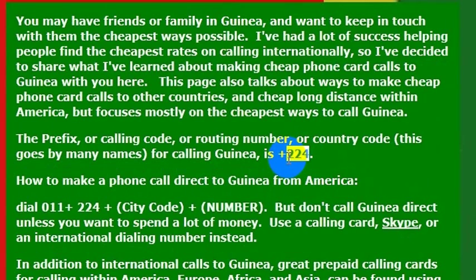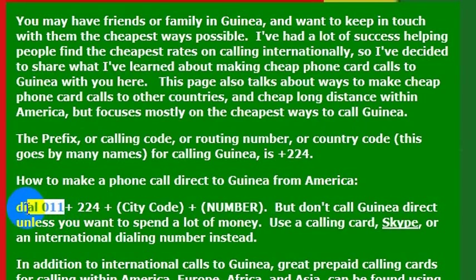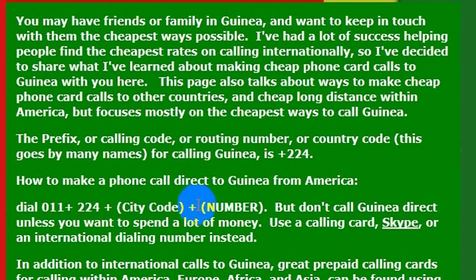To call Guinea from the United States, you need a phone that is enabled to make international phone calls. A lot of times this won't be a cell phone, but if you have a landline and you want to make an international call, you dial 011, then the country code, which is 224, and then you would dial the city code and the number.